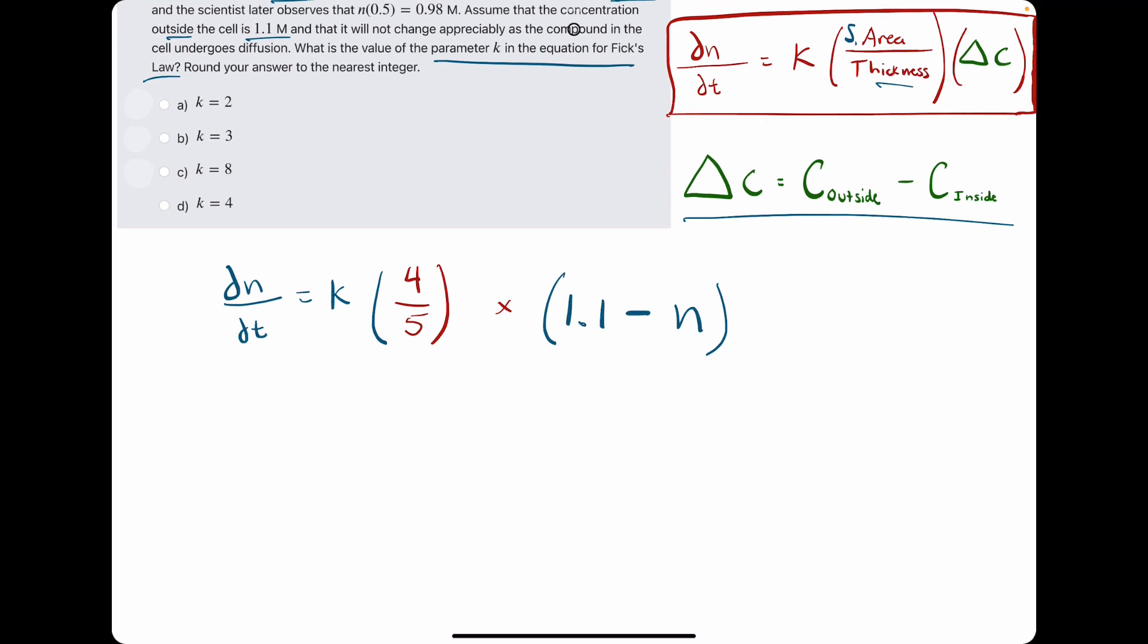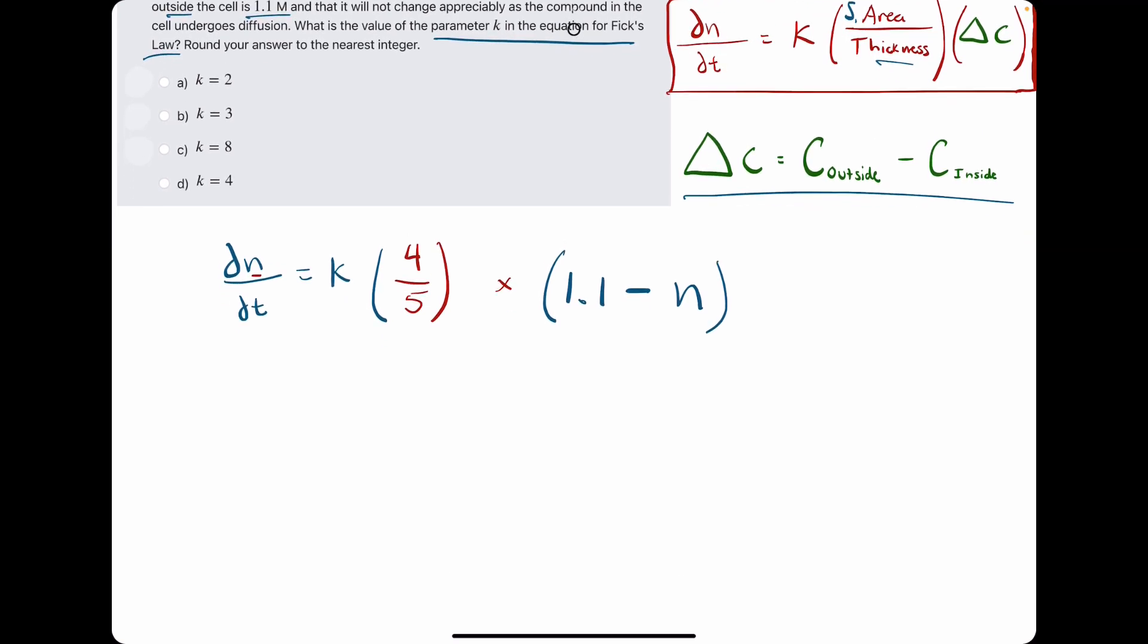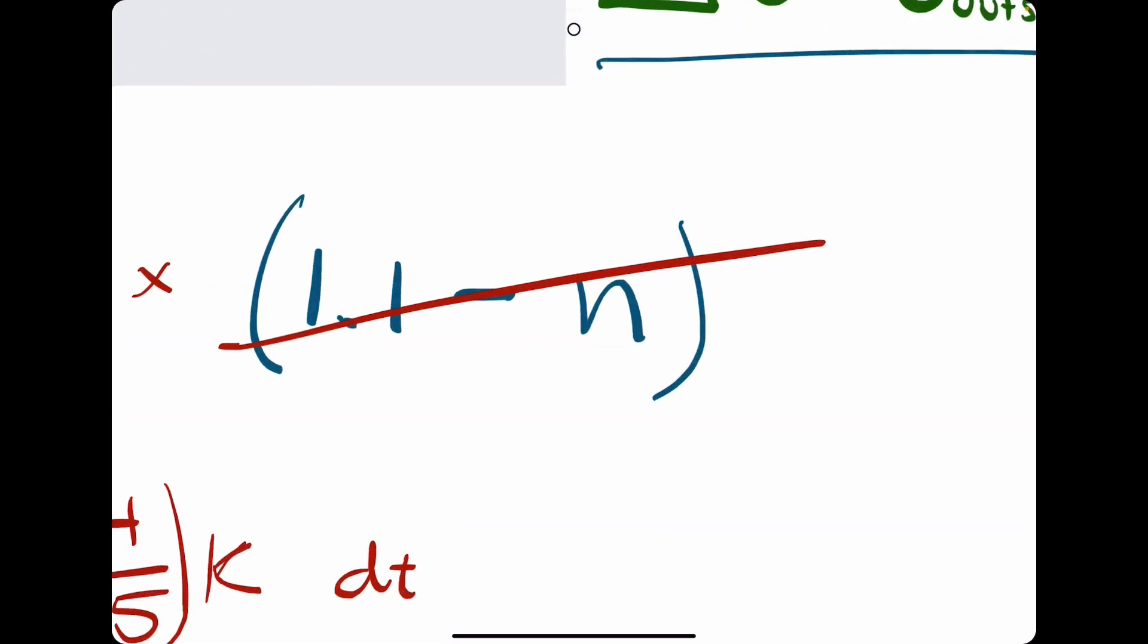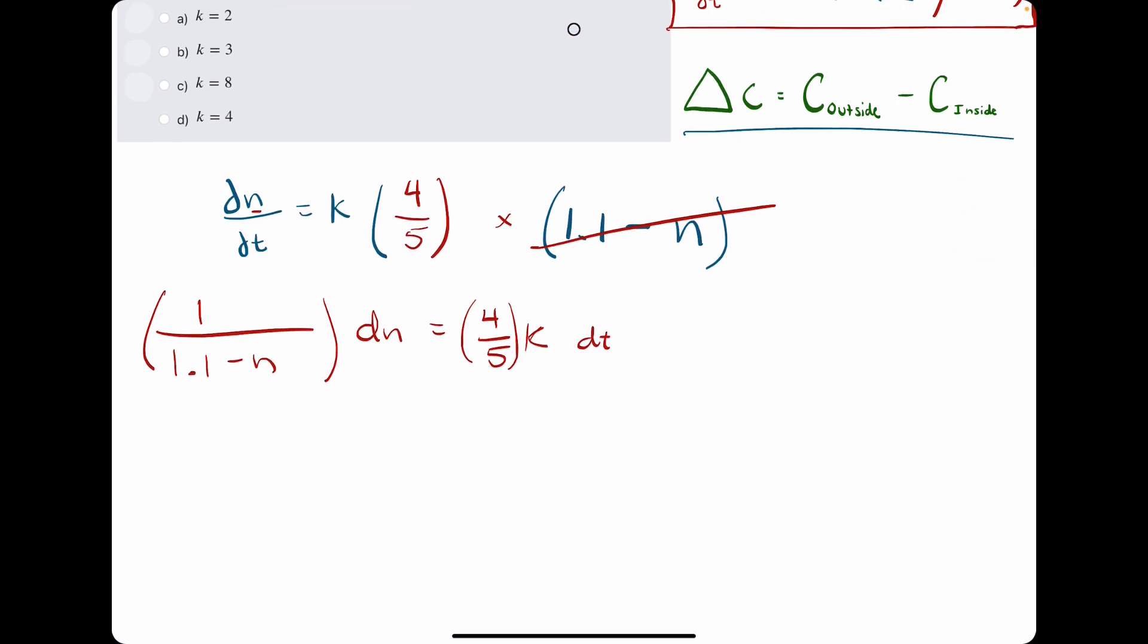So now what we can do is separate the variables. We're going to get the n terms on the left side because the dn is on top, so it acts very much like our dy we usually see. So what we're going to do, instead of multiplying by 1 over y like we usually do, we'll essentially multiply by 1 over 1.1 minus n on both sides, while simultaneously multiplying the dt to the right side. So on the right side, we have 4 fifths k dt. And we've divided this 1.1 minus n to the left side and then multiplied the dt to the right side.